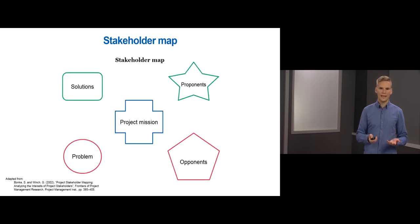The stakeholder map analyzes the problems and proposed solutions that different stakeholders have for the project, and whether these stakeholders can be considered as proponents or opponents of the project.